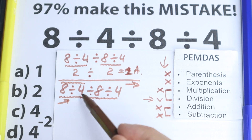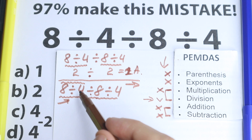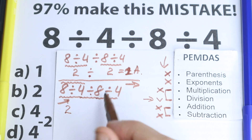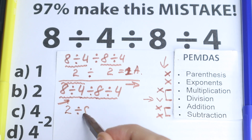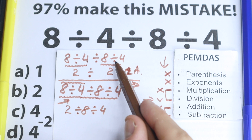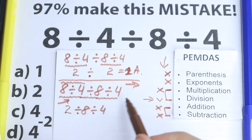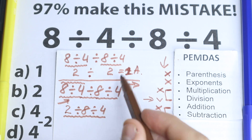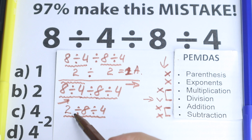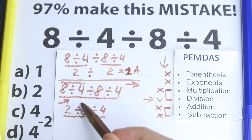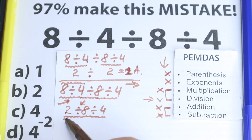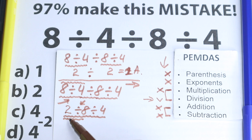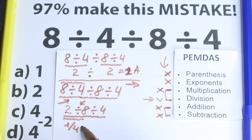So we need to divide 8 by 4 first — this is the same first step as before. So 8 divided by 4 equals 2, and we still have the expression: 2 divided by 8 divided by 4. Now the first sign from left to right is this division, so 2 divided by 8 is our second step. 2 divided by 8 equals 1 over 4 — I write it in fraction form. And we still have this last division: 1 over 4 divided by 4 equals 1 over 16.